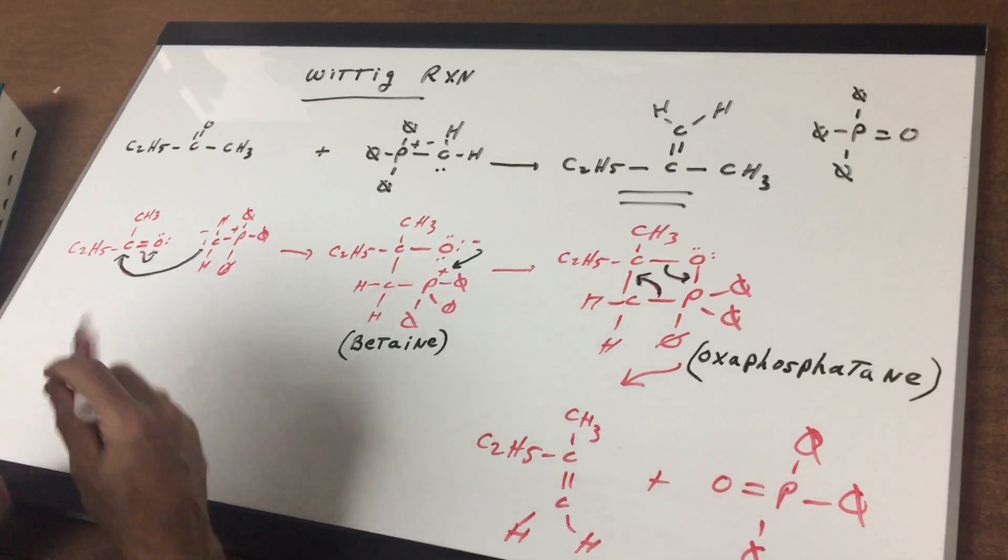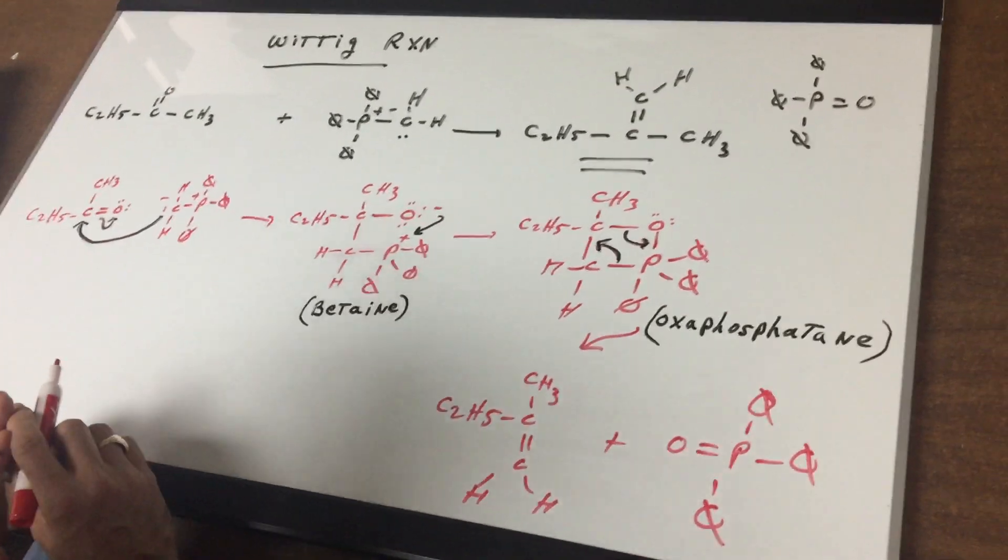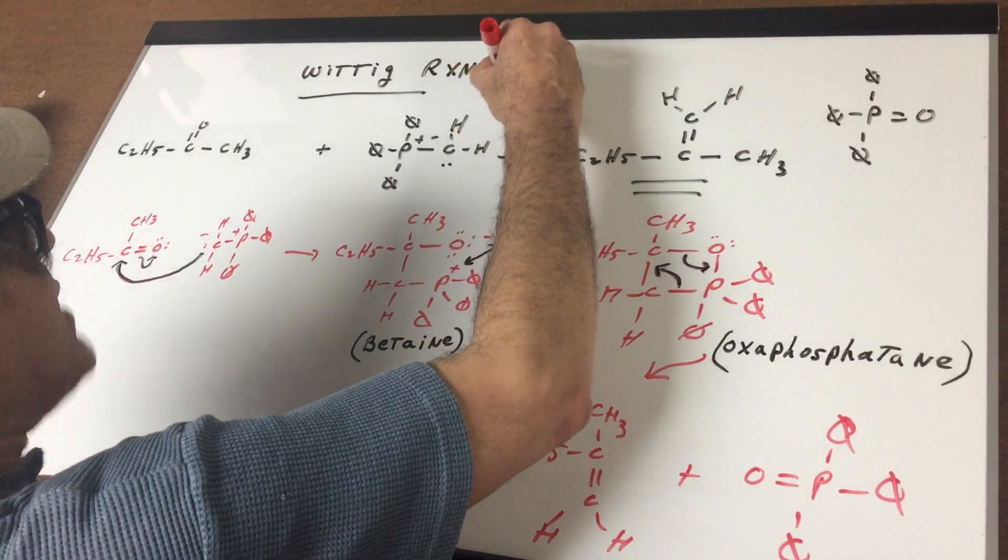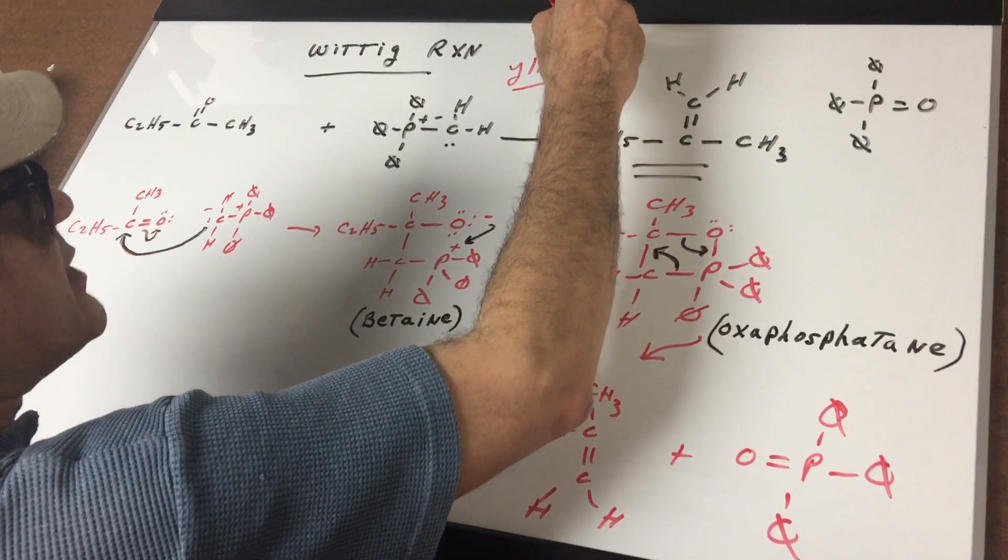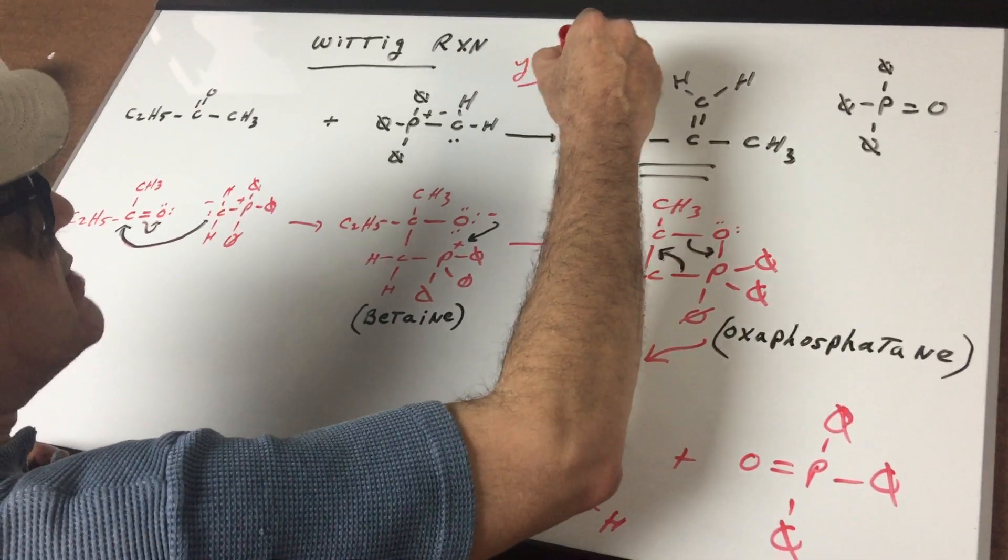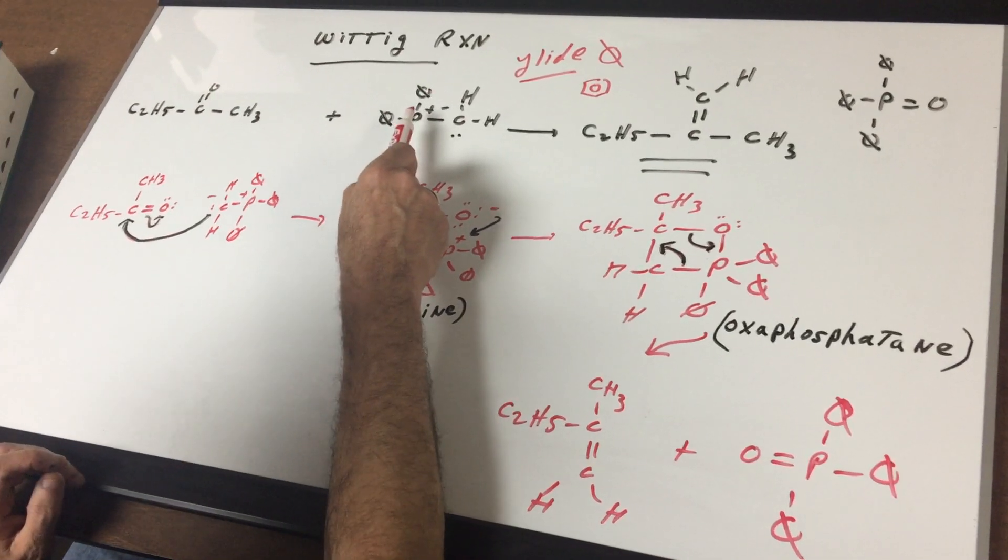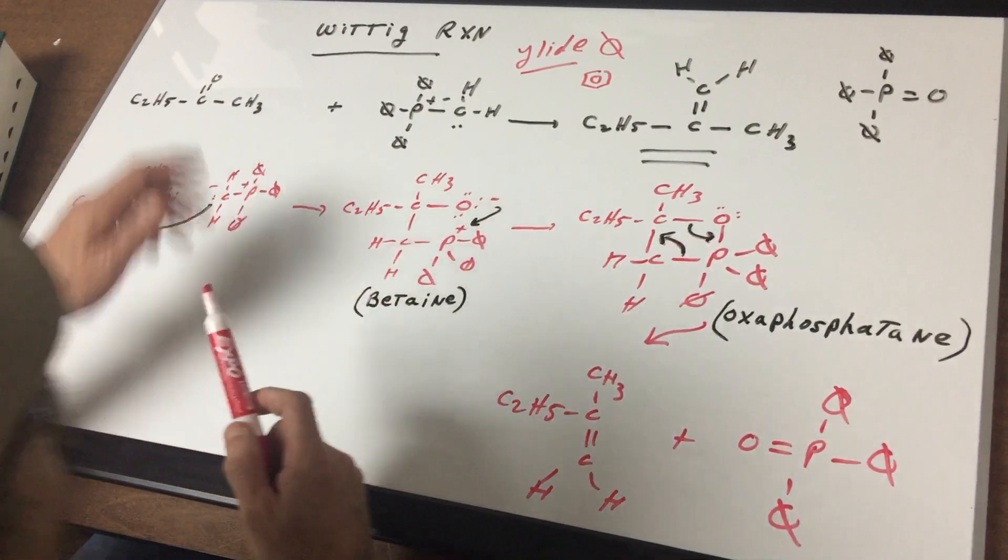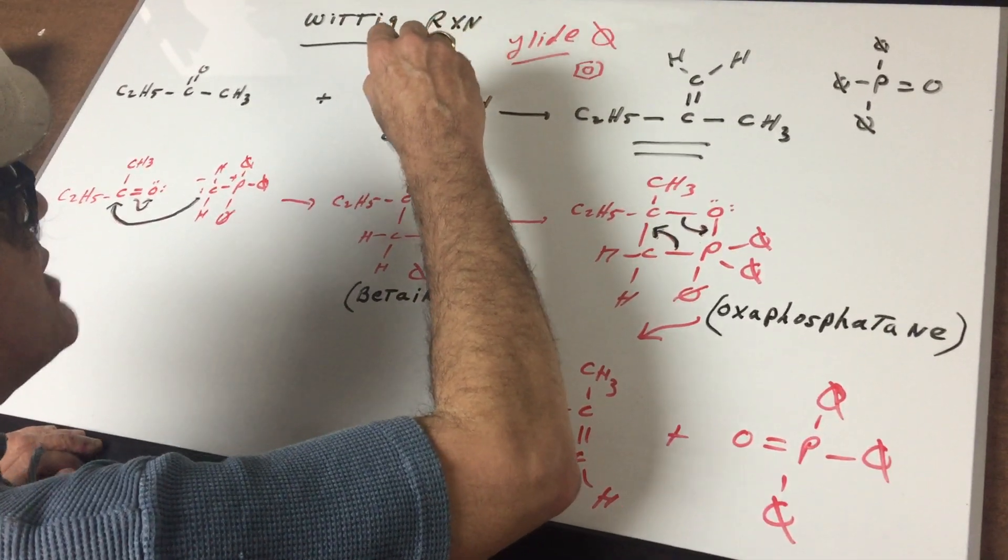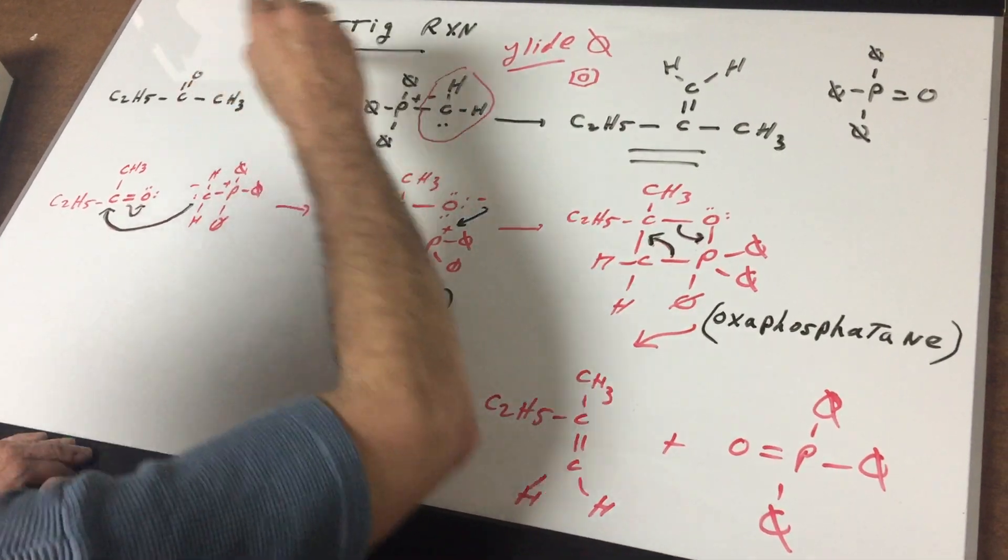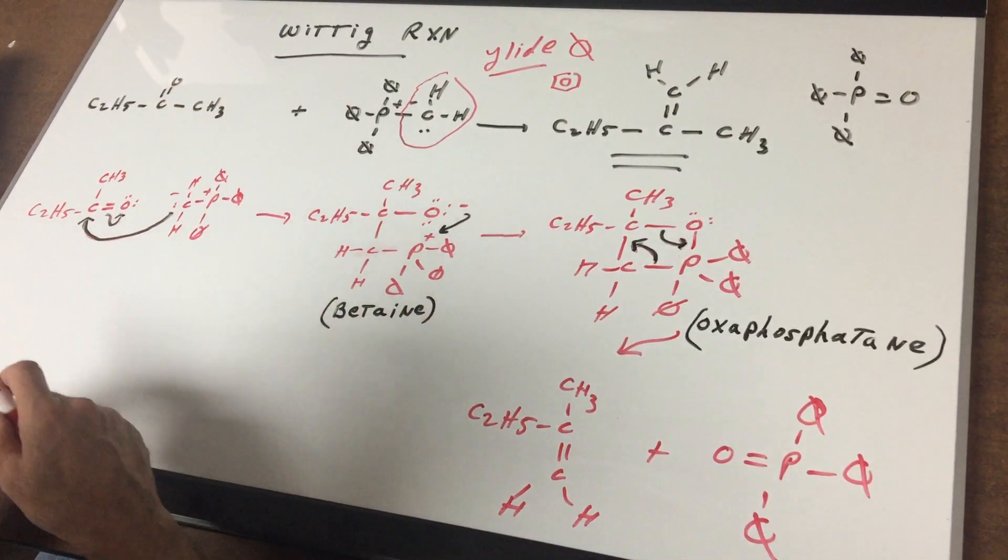In a Wittig we're gonna look for an aldehyde or a ketone and you're gonna treat it with a chemical called an illid. It's got a funny name, an illid. Now I'm gonna use this symbol, a zero with a slash through it, to represent the benzene ring. So don't get scared if you see that. So what we did is we took an illid and we treated it in this case with a ketone, and what you're gonna simply do is whatever is attached to the phosphorus, which is all this, gets swapped with the double bond O, and the double bond O, the O from the double bond, goes to the P.